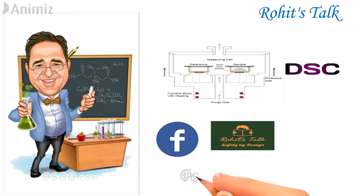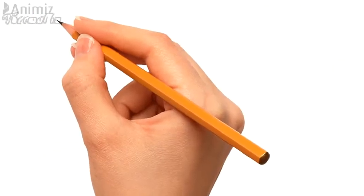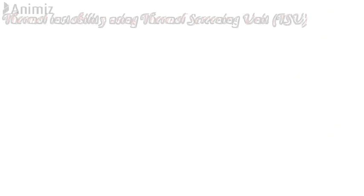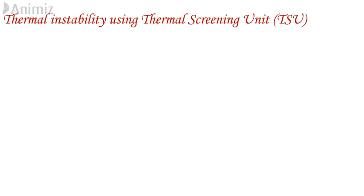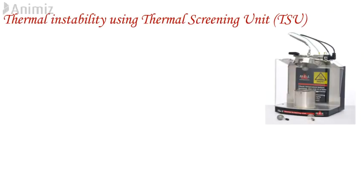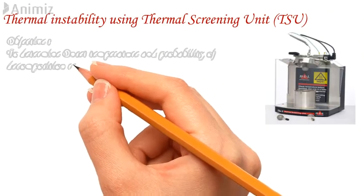So let's start today's topic: Powder Safety Part 6 — Determination of thermal instability using the Thermal Screening Unit, i.e., the TSU test procedure. In this test,